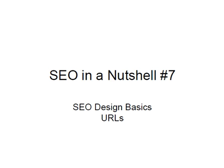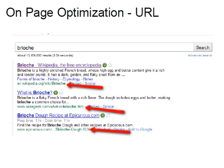In a nutshell, video number seven: URLs. In the previous video we talked about using keywords for SEO. In this video I'm showing the Google results for 'brioche' — the number one entry out of more than 13 million was the Wikipedia page I showed you in the prior video. The URL means Uniform Resource Locator, and it is basically the web address for a particular page.